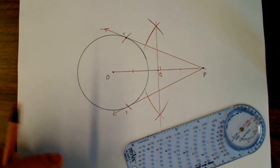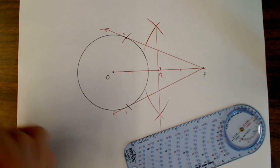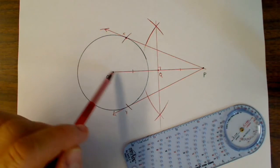So if there's ever a point that's not on the circle, you can always draw two tangents to the circle. And that's how you do it.